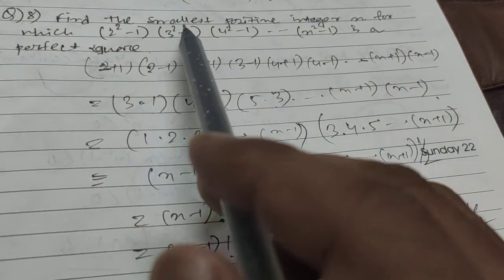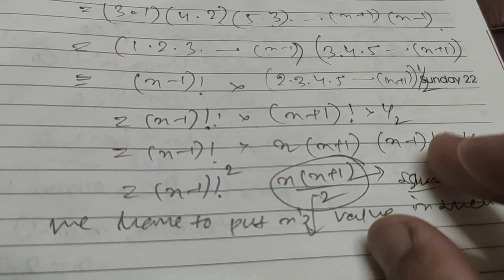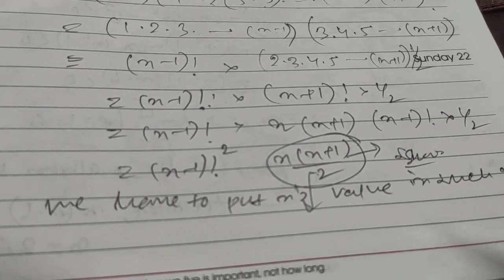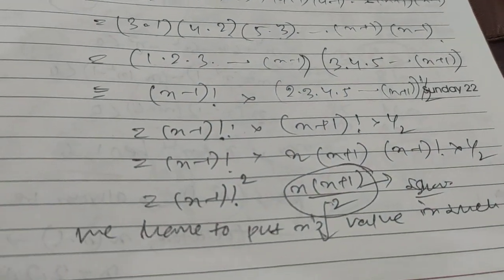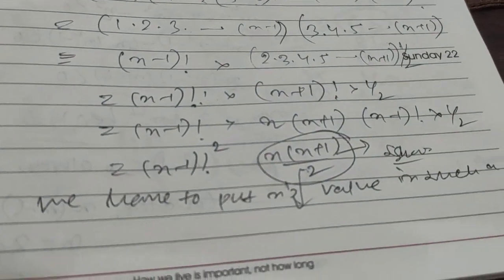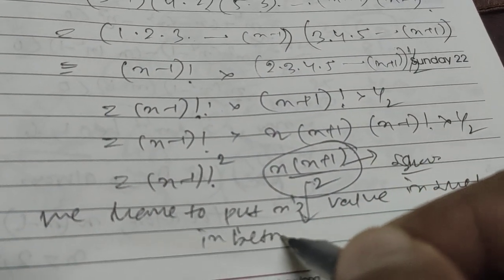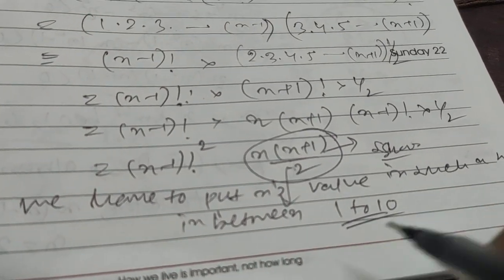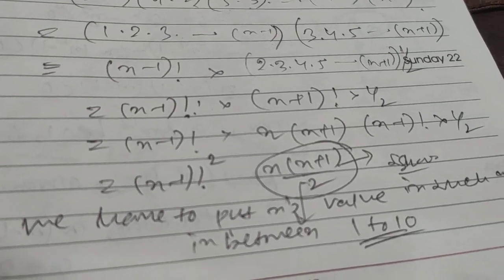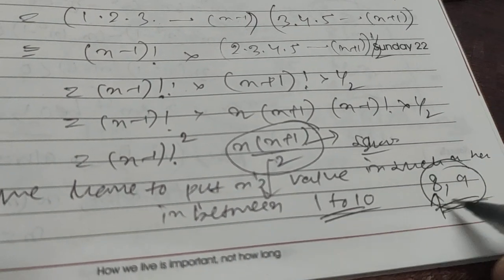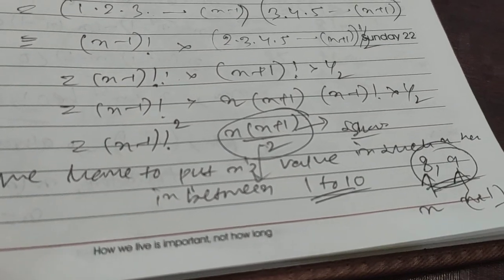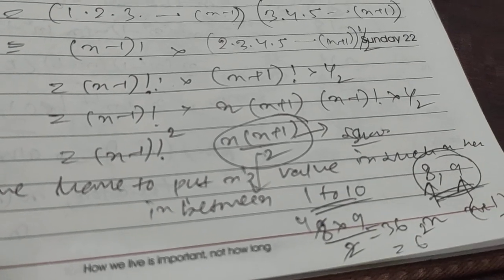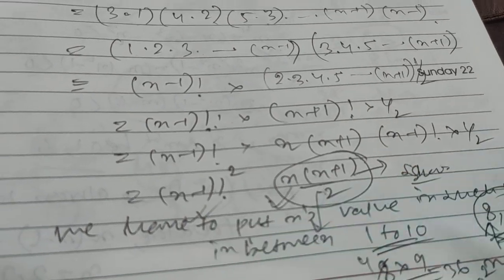Since we want the smallest positive n, assume it's between 1 and 10 — if not found there, we check further. In the range 1 to 10, we need one number that is a perfect cube and an adjacent number that is a perfect square. The only combination is 8 and 9. So if n=8, then n+1=9, and n(n+1)/2 = 8×9/2 = 36 = 6². That's a perfect square!